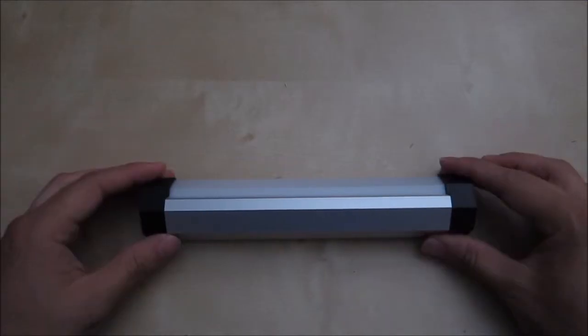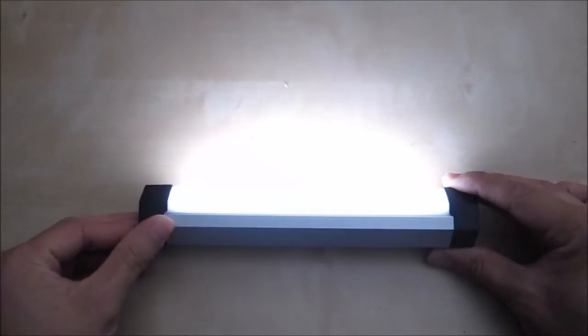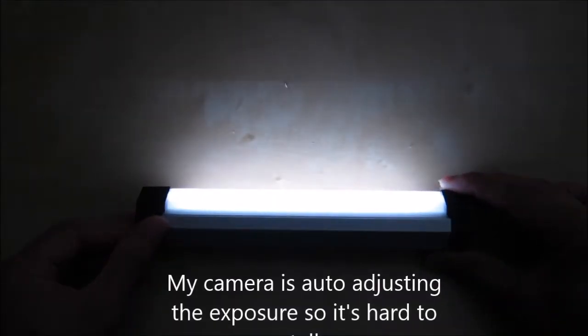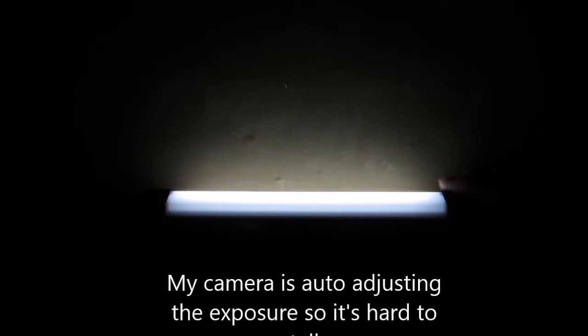So to use this lamp it's pretty easy. All you have to do is press the button once here, and that will give you the first 25%. Then you press it again, it's 50%. That's how bright it gets. 75%, and then 100%. And then the next mode you have is a flashing mode, so press it one more time and it's flashing. Press it again and it will turn it off.